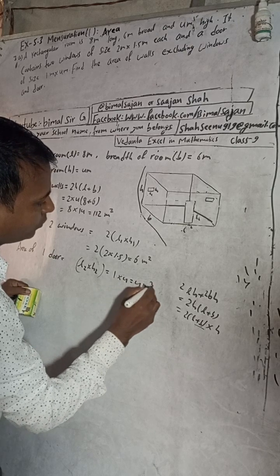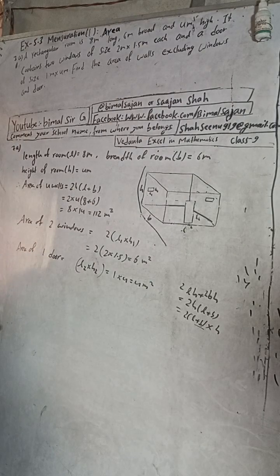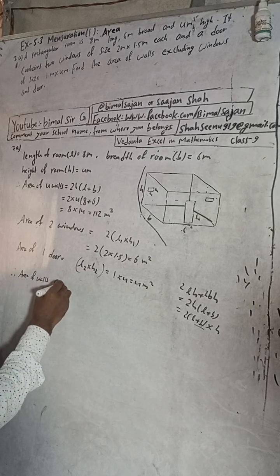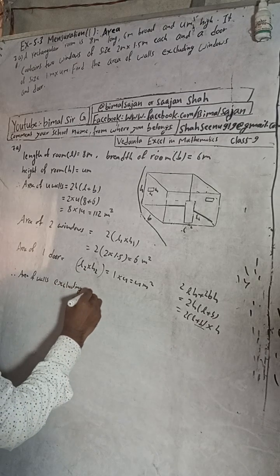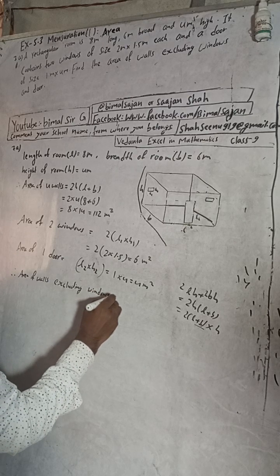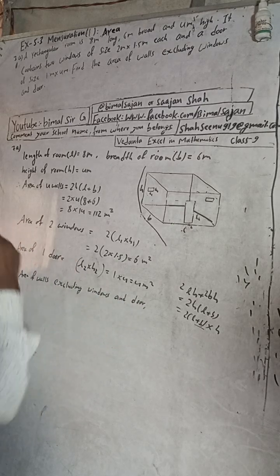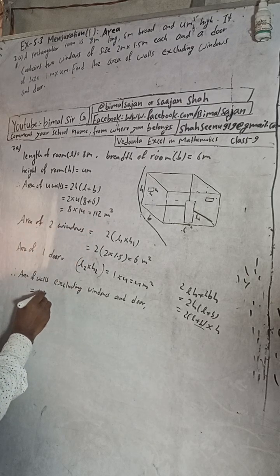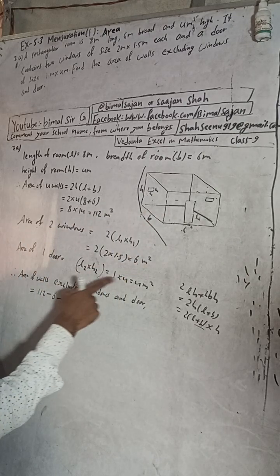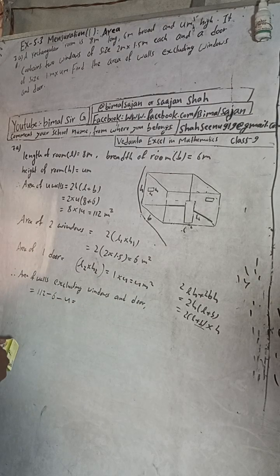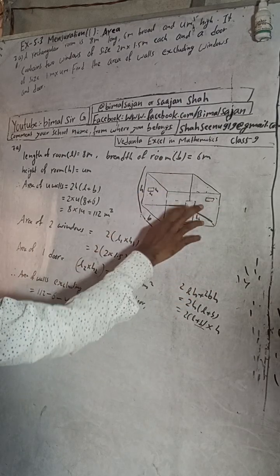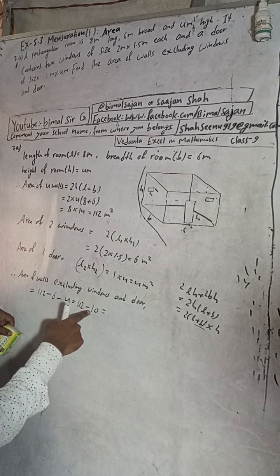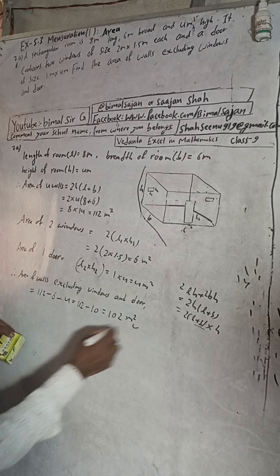Now we need to find the area of walls excluding windows and doors. Area of walls excluding windows and door is equal to the four walls, 112, minus the two windows, minus 6, and again minus 4 for the door. Excluding means subtracting. So 112 minus 6 minus 4 equals 102 square meters. So this is the answer for this question.